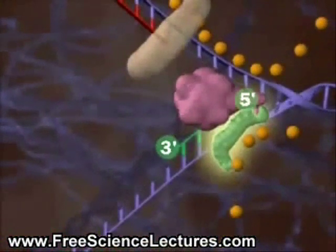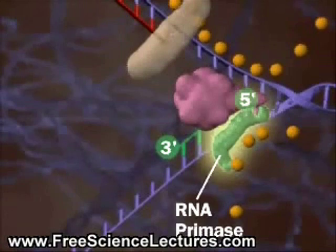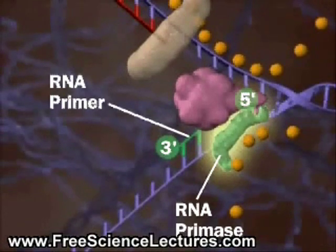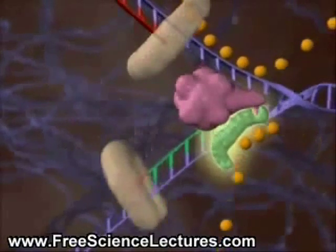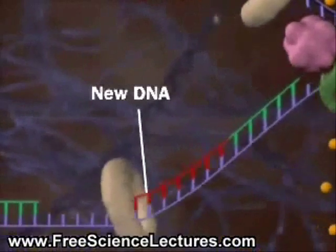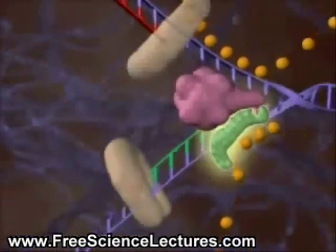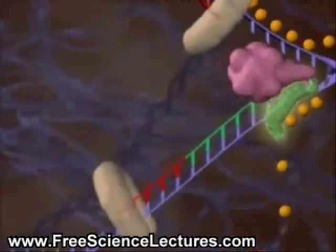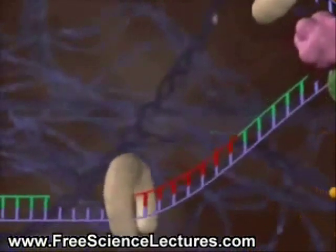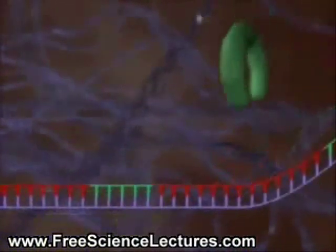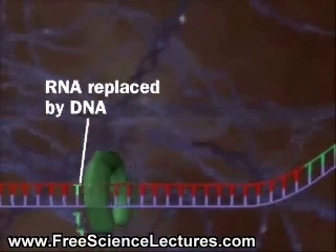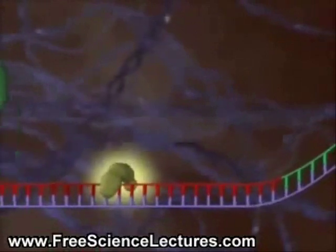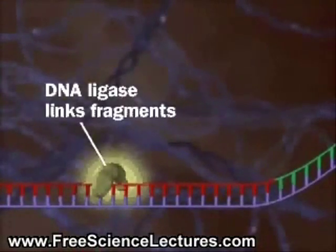RNA primase lays down an RNA primer. Then DNA polymerase 3 lays down the new DNA. This process repeats itself again and again. DNA polymerase 1 replaces the RNA primer with DNA. Finally, DNA ligase links the Okazaki fragments together.